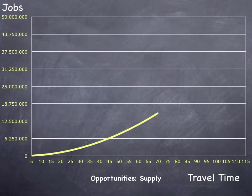The number of available destinations increases with travel time, assuming a uniform density. Of course, cities do not go on forever, or even 115 minutes, and do not have uniform density. But the number of jobs does increase with distance. In five minutes, we can barely leave the civil engineering building. Ten minutes away, the number of jobs increases. Twenty minutes away, it increases more. It looks like the figure drawn on the slide.